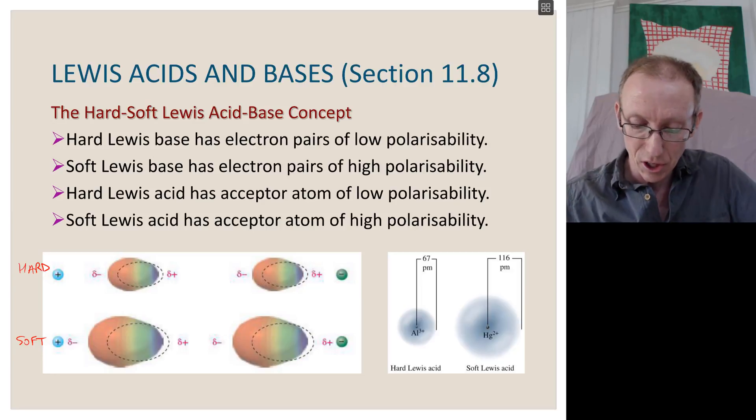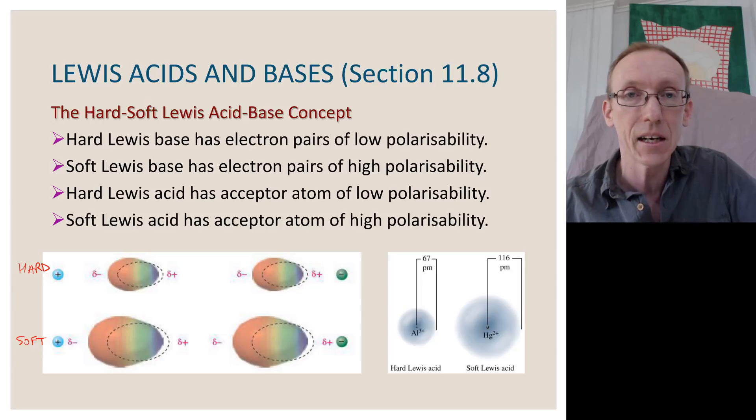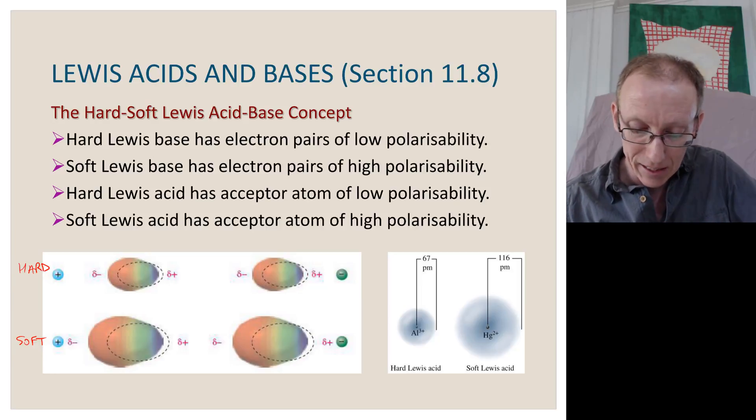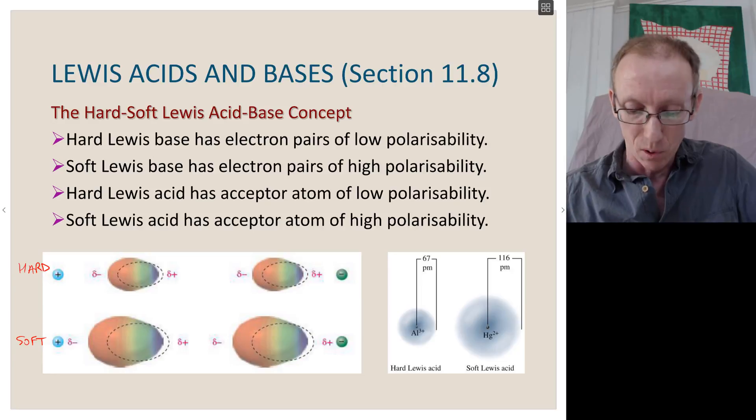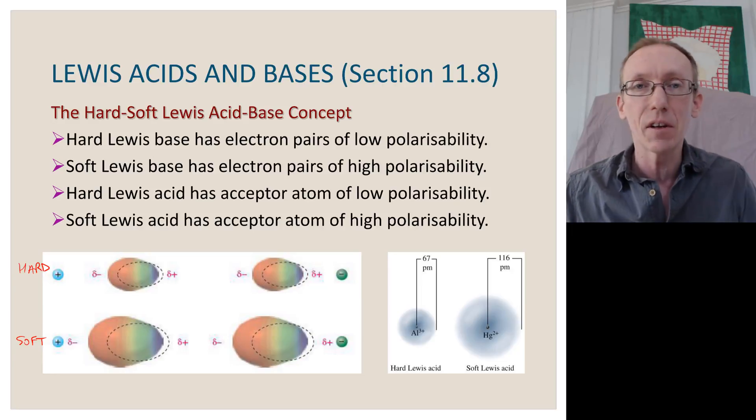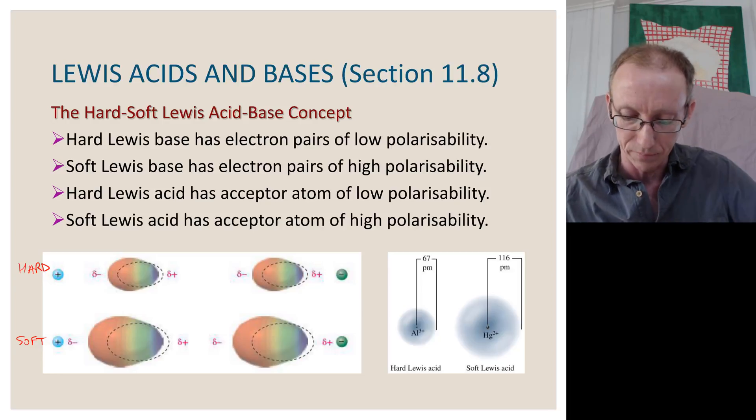And so we can look at this in terms of particular elements. So a hard Lewis acid, an example, would be aluminum 3+. So aluminum 3+ has a quite small radius, so 67 picometers, and has a very large positive charge in that small volume. And so it doesn't have a very large electron cloud to be polarized or to polarize electrons towards itself.